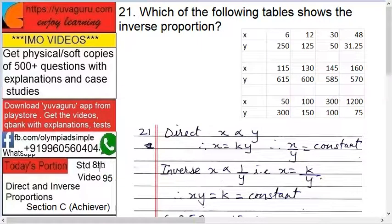Hi friends, welcome to IMO videos, Standard 8, Video number 95: Direct and Inverse Proportions, Section C, Achiever level, toughest one.